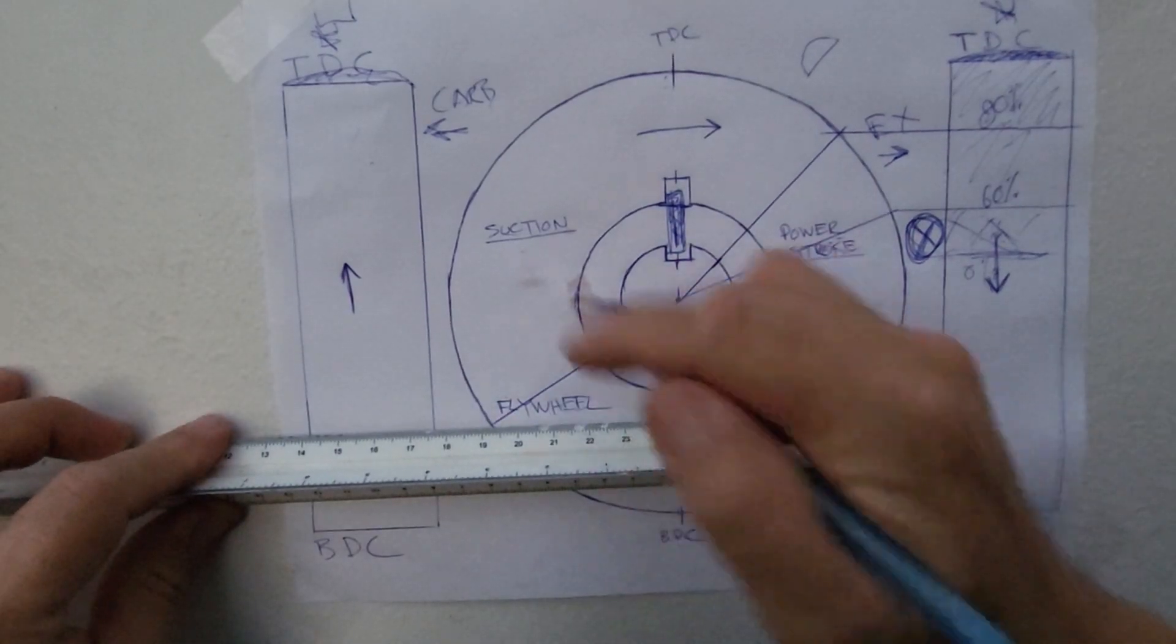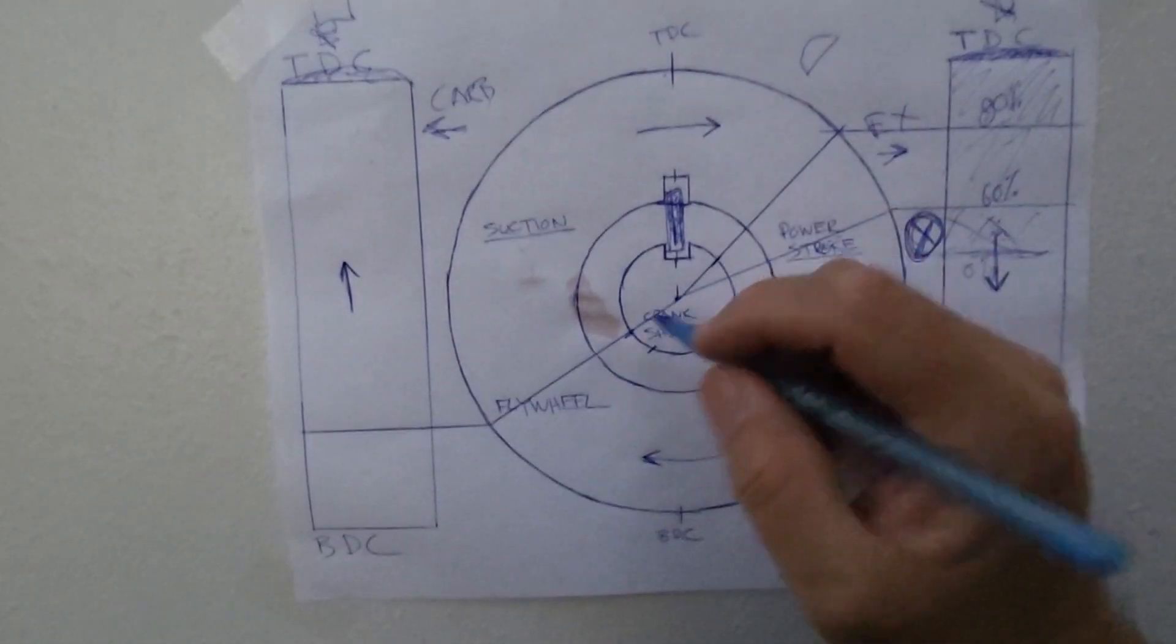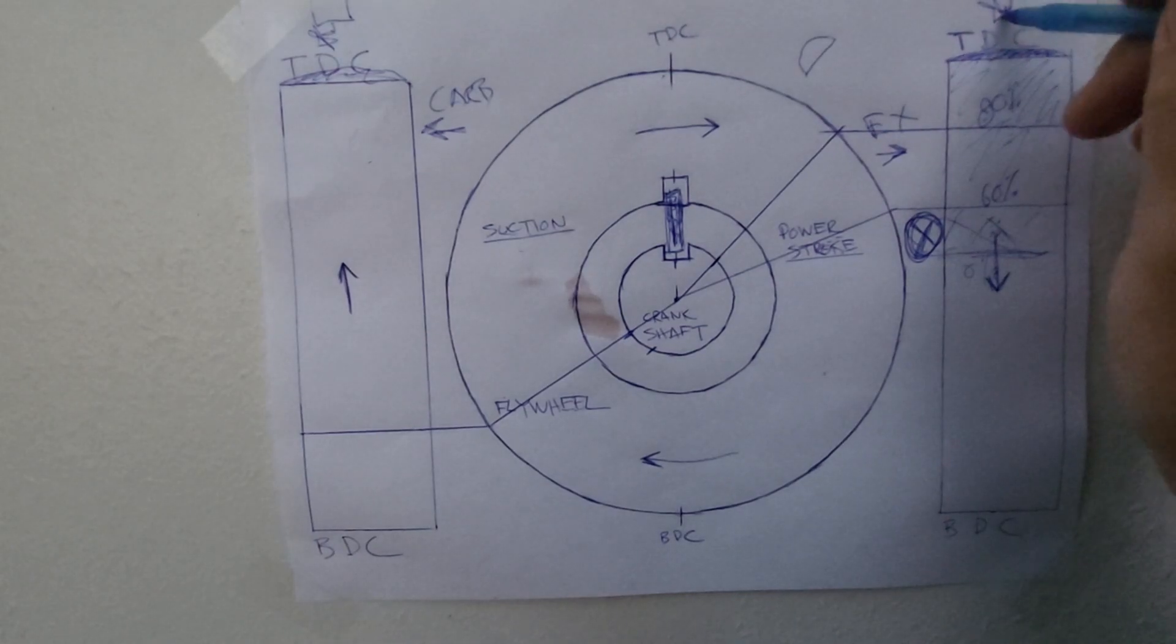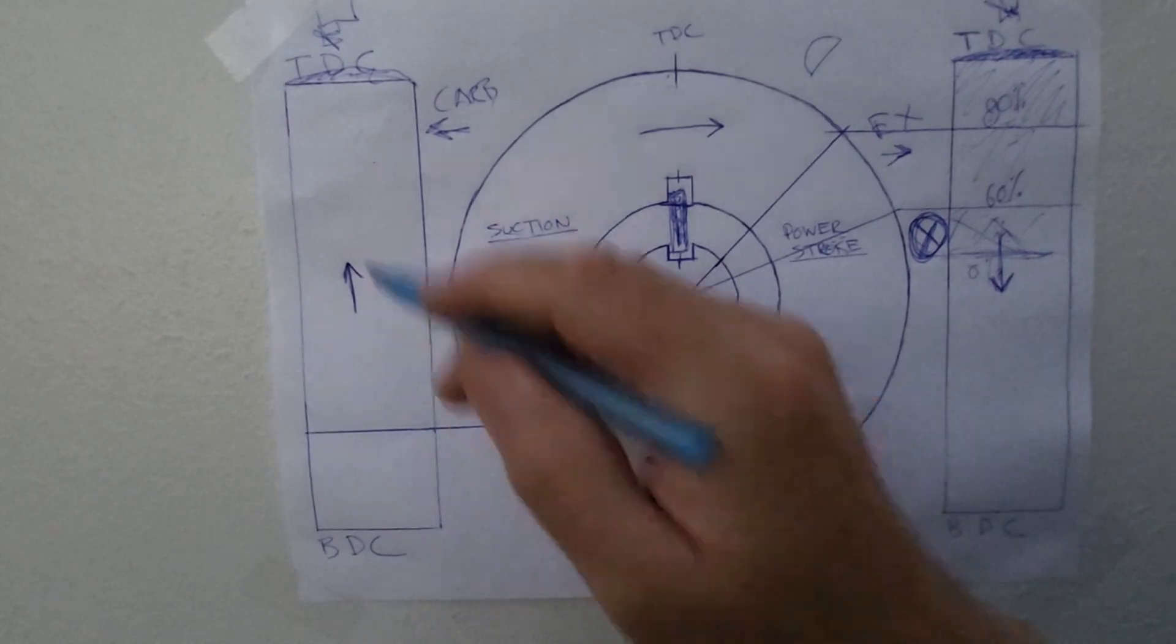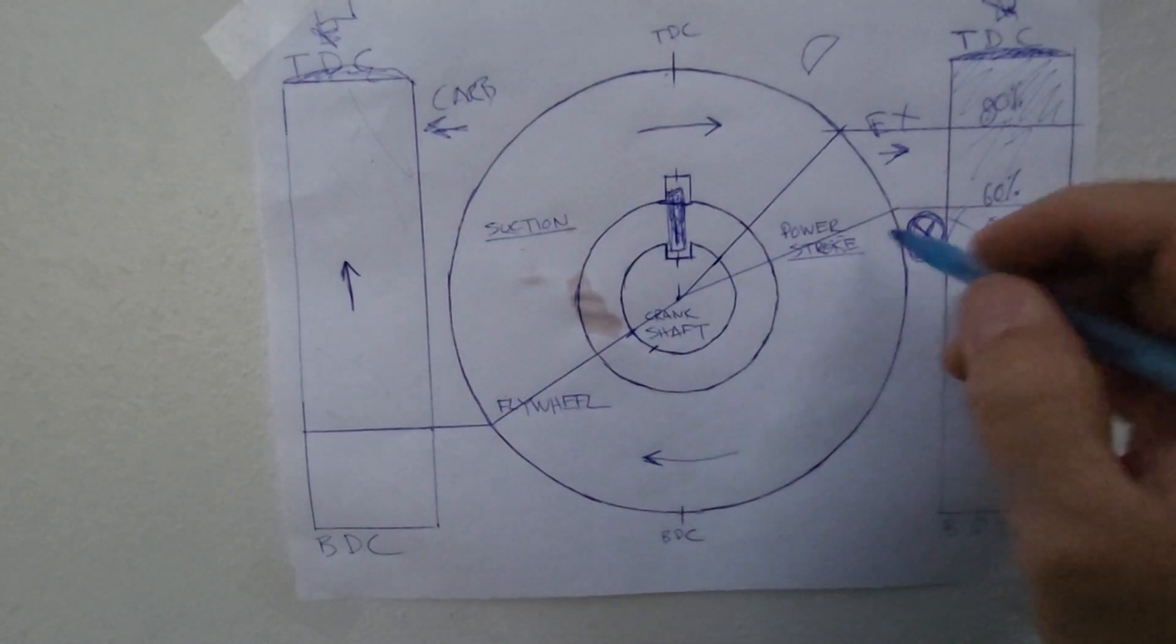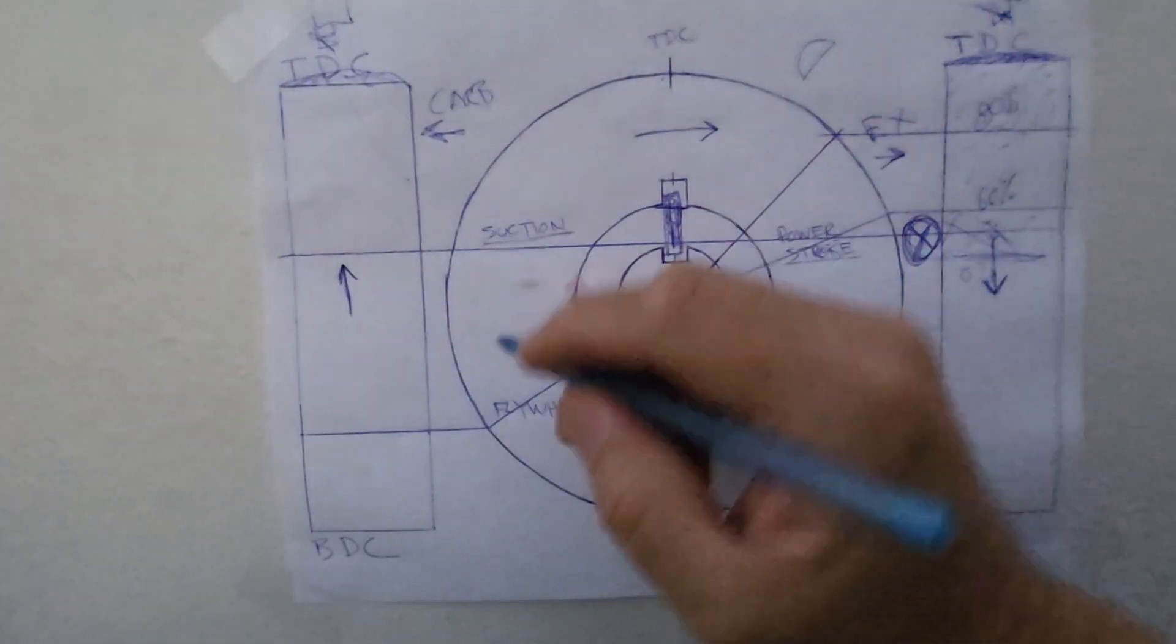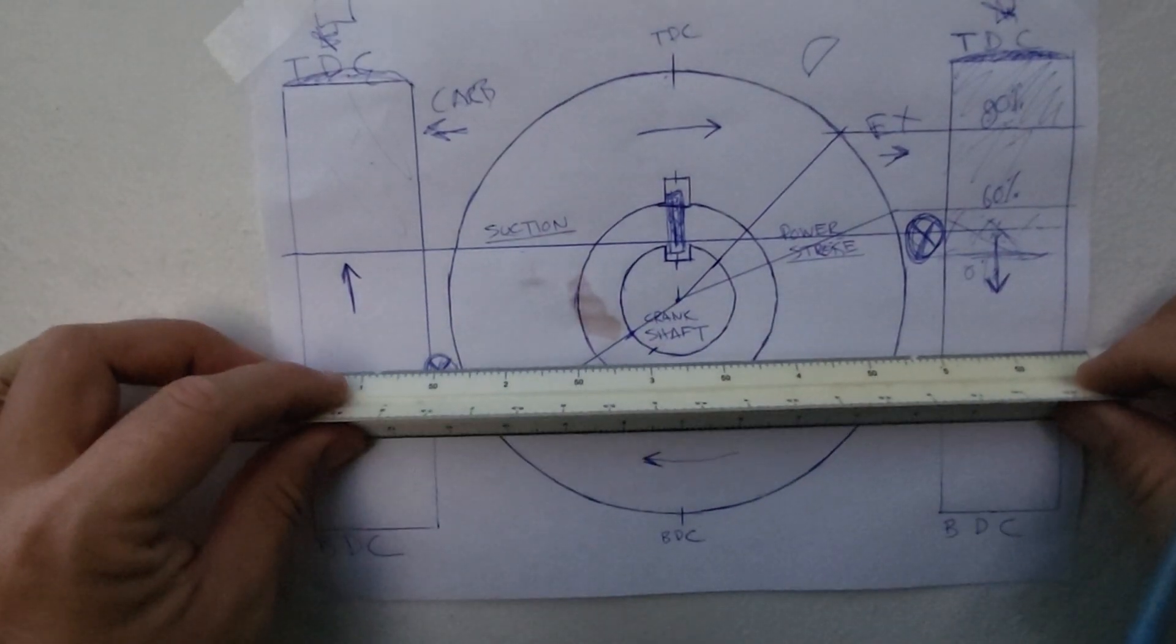So your crank is right here, which means the spark plug is igniting at this point, which means there is no fuel being ignited anywhere in here. There's no fuel. You're just having a backfire because of the fact that your exhaust port with respect to your carburetor port.